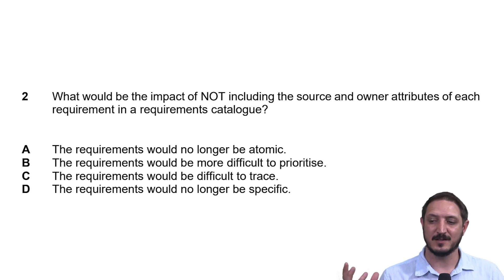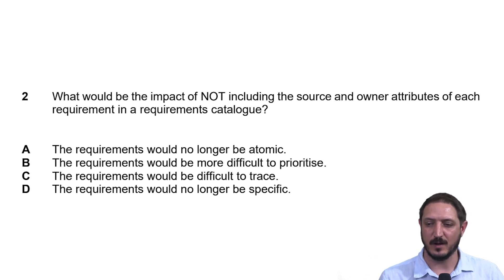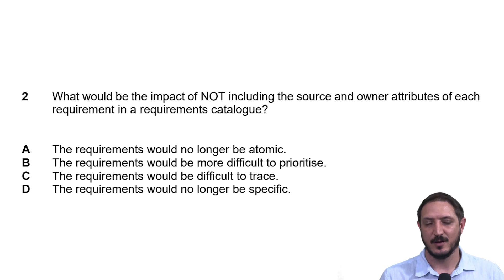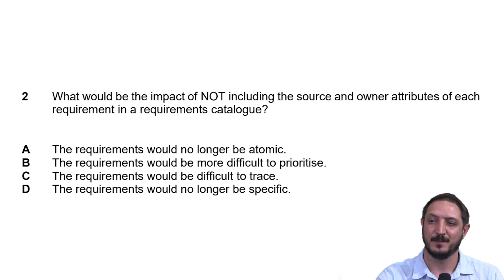Backwards traceability in requirements management is about asking where a requirement came from, and clarifying requirements when there are conflicting views. To manage requirements effectively, we need information such as the source and owner recorded in our requirements catalog.